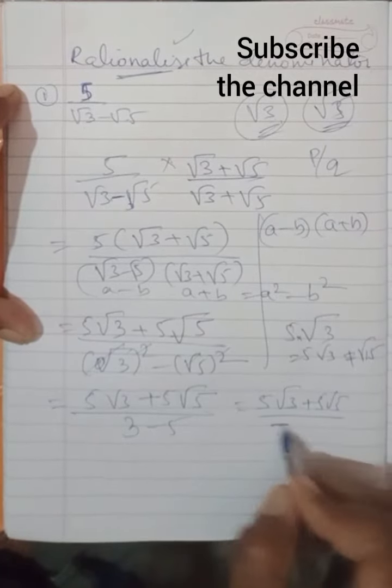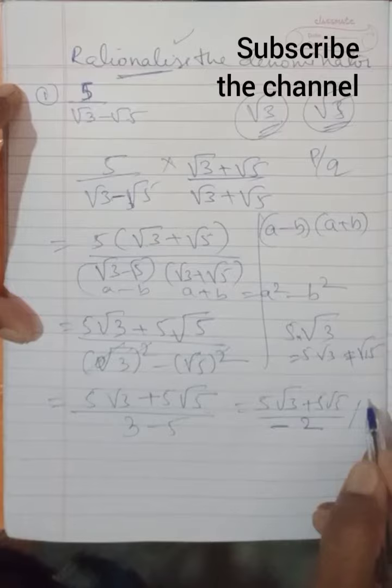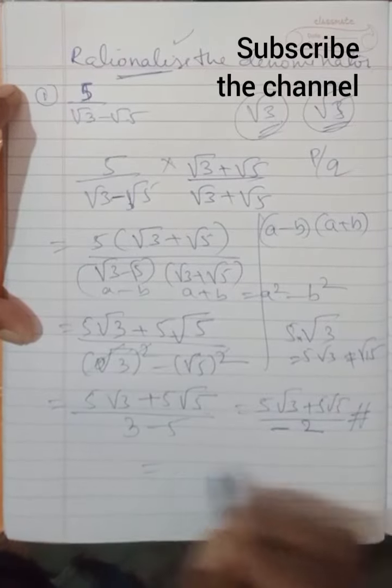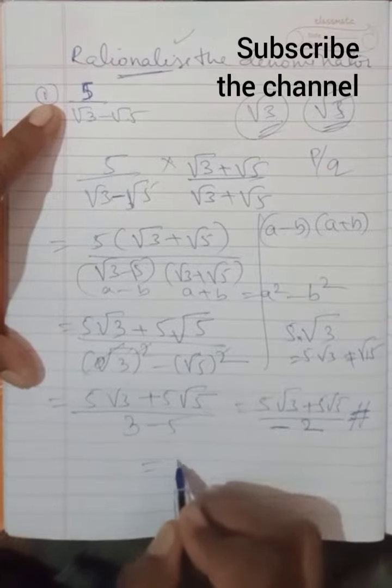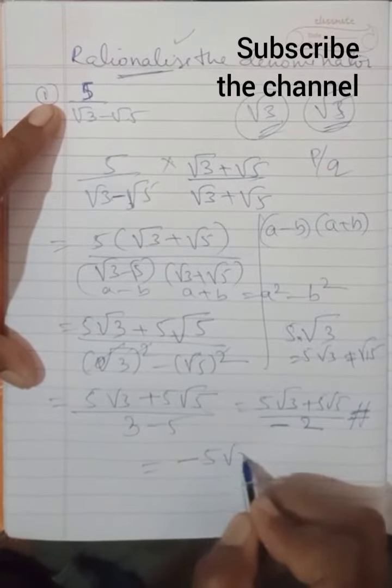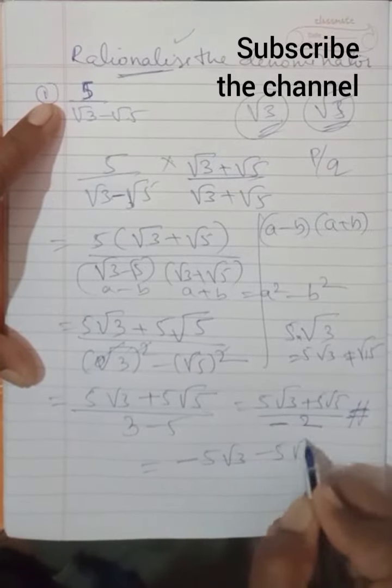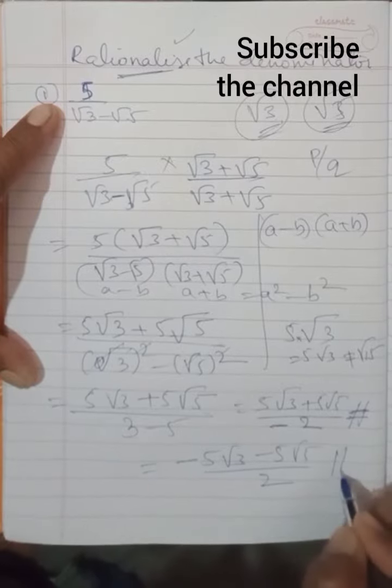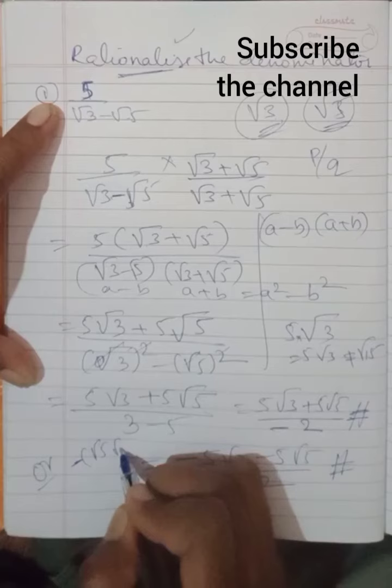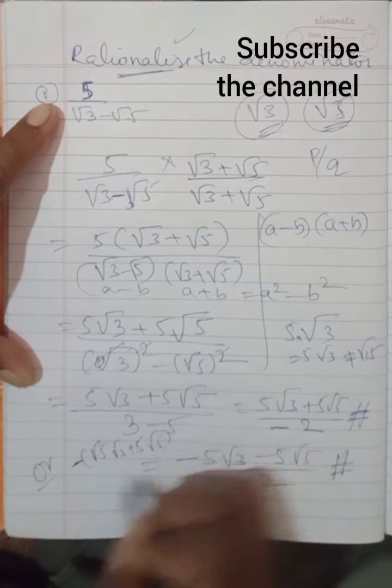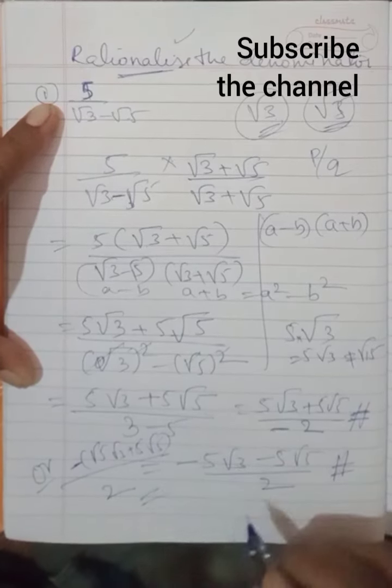If you are going for MCQs, there is a chance of getting this. This is the correct answer. If MCQ options are there, you are going to get this too: minus 5 root 3 then minus 5 root 5 upon 2. This may be the answer, or you may get minus 5 root 3 plus 5 root 5 divided by 2. These are the possible answers.